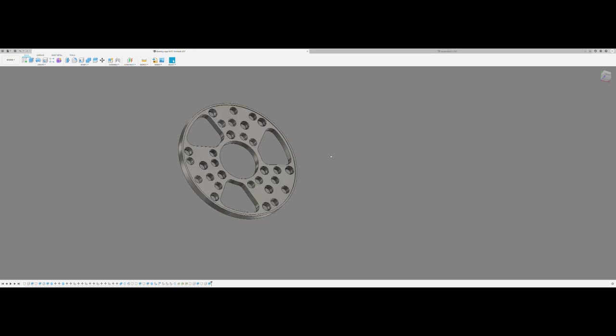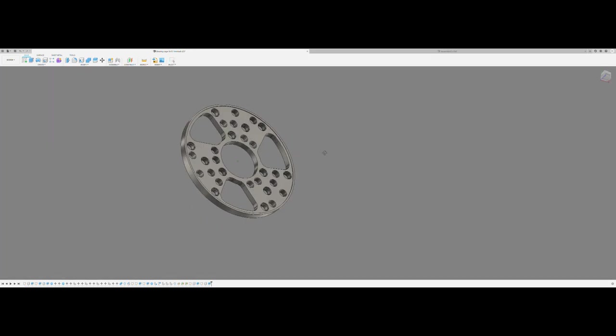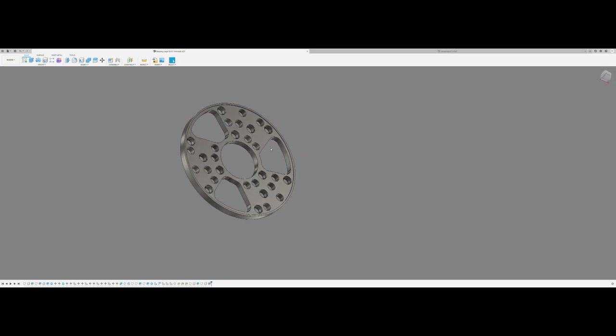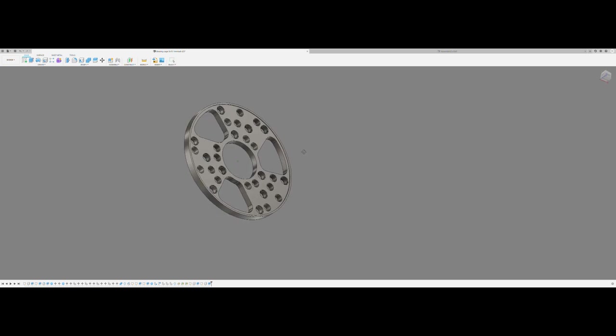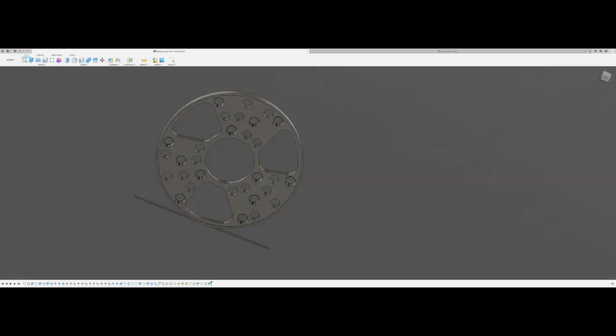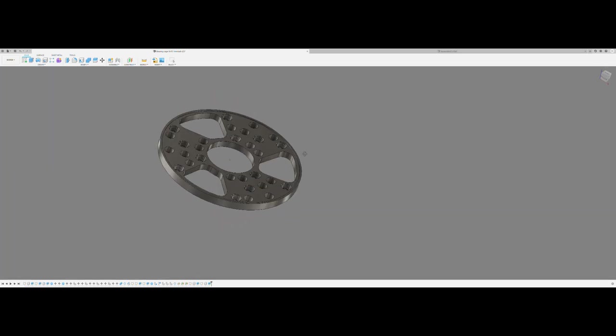The part we're going to be working on today is the cage itself, made out of 6AL4V titanium. I realize it's not the lightest material but I am taking a lot of material out of it and it's a visible part. If you look down the edge of the knife you can see the titanium. I like to be able to anodize it the same color as the other parts of the knife. Plus it's nice and rigid and pretty easily machined.